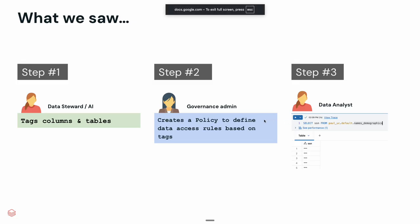So what did we just see? Well, step one, we saw manually tagging the data and then scaling that out using data classification technology. Step two, we saw authoring an ABAC policy, which is designed to automatically protect the data that's been tagged. And then step three, we saw an end user querying the data and it returning masked values.